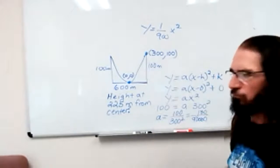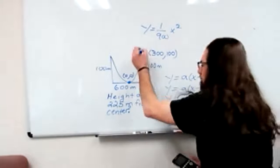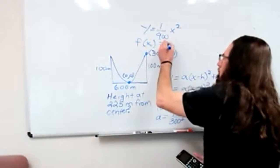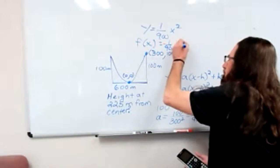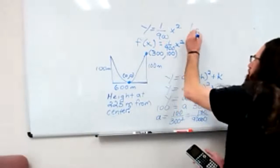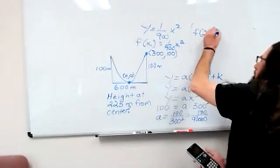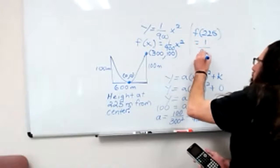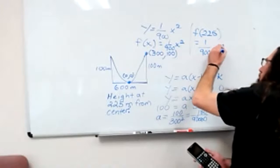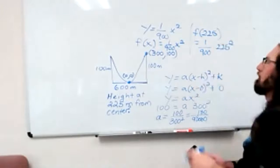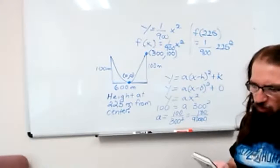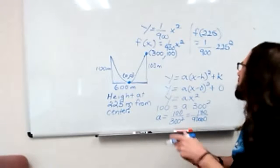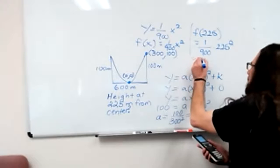Therefore, if we call y f of x, we're looking for f of 225. And the fastest way to come up with that would be to square the 225 and divide that by 900.